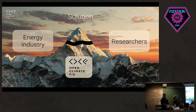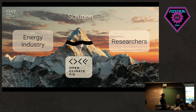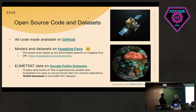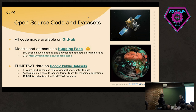We see ourselves as a middleman between ML researchers and the energy industry. We want to make our data available to researchers and make what ML researchers are doing available to the energy industry. All of our code is available on GitHub. We also have models and datasets available on Hugging Face — a lot of the datasets are NWP data or numerical weather predictions, and up to date we have 500 people who have signed up to download those datasets.